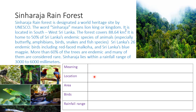The table asks for several pieces of information. First, the meaning — the meaning of the word Sinharaja; read the text and find it. Then the location — the place where this forest is. Next, the area — the size of the forest. Then the birds you can see there. And finally, the rainfall range. Take some time to read the text and find the relevant information.